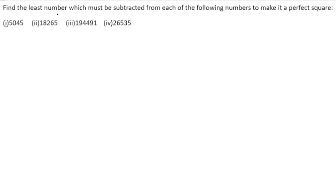Find the least number which must be subtracted from each of the following numbers to make it a perfect square. The given numbers are not perfect squares, so to make them perfect squares, we need to find the least number which should be subtracted from each.